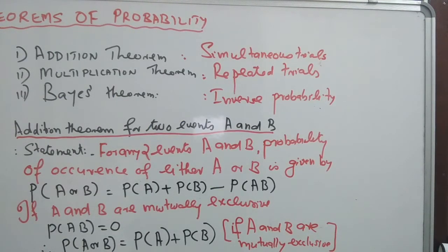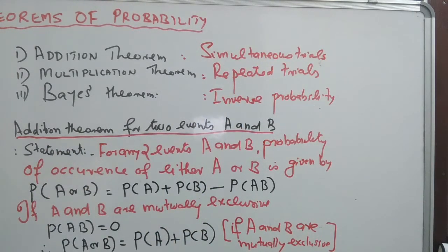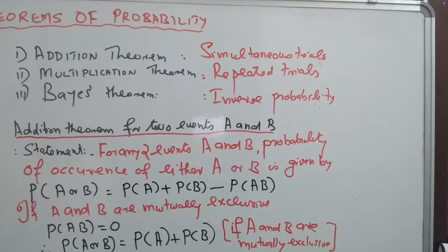Students of management studies require some minimum basic concepts of these theorems. We discuss three theorems: the addition theorem, for simultaneous trials; the multiplication theorem, for repeated trials; and Bayes theorem, which is used to improve the quality of decision making based on past experience. Bayes theorem is a theorem of inverse probability.